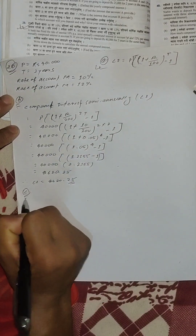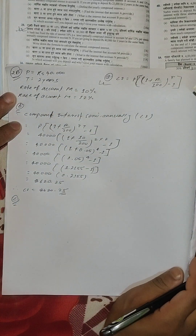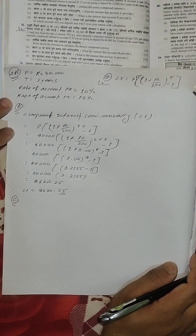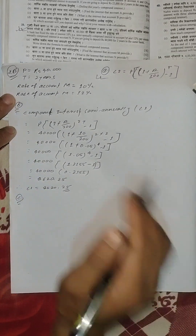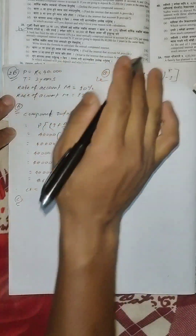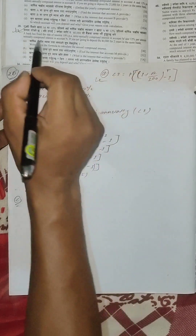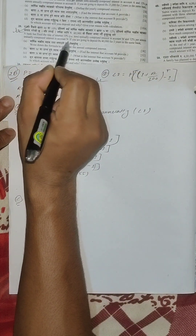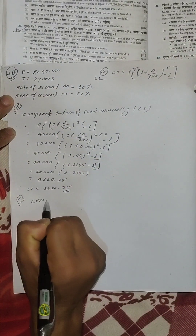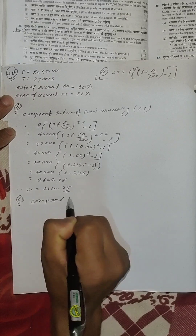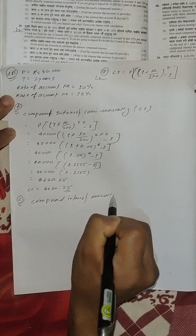Now let's go to account N. What is the interest that account N provides? In this account, the rate is 12% per annum annually, compound interest in account N. Account N will be compounded annually. So let's go to the formula: compound interest annually.